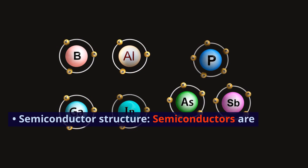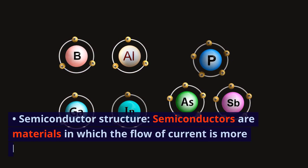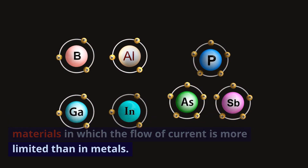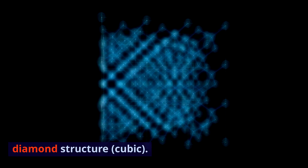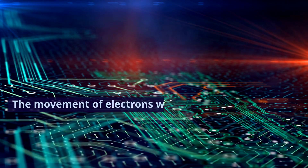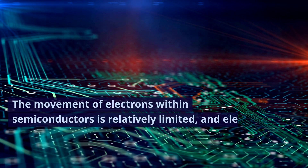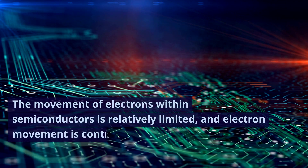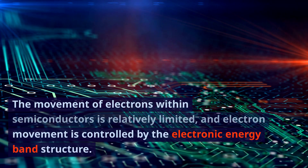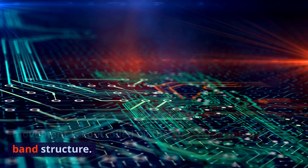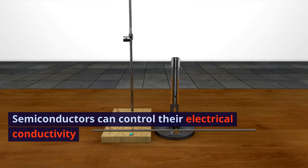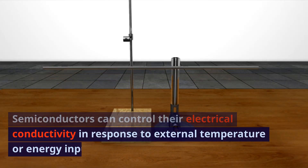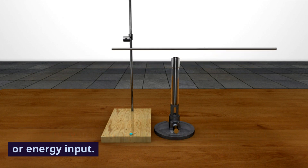Semiconductor structure. Semiconductors are materials in which the flow of current is more limited than in metals. The semiconductor structure is typically a diamond structure, cubic. The movement of electrons within semiconductors is relatively limited, and electron movement is controlled by the electronic energy band structure. Semiconductors can control their electrical conductivity in response to external temperature or energy input.